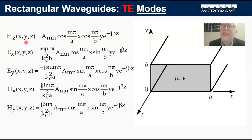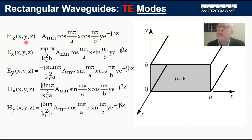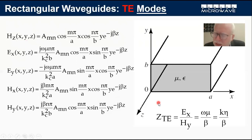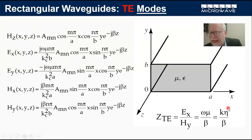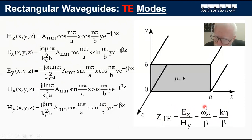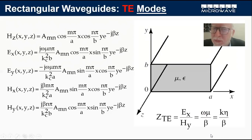Let's start with what's called the TE impedance, Z_TE. From prior exercises you know that Z_TE equals E_x over H_y, or equivalently minus E_y over H_x. Dividing E_x by H_y gives the simple expression k·eta over beta, where eta is the intrinsic impedance equal to the square root of mu over epsilon. Importantly, Z_TE is frequency-dependent.